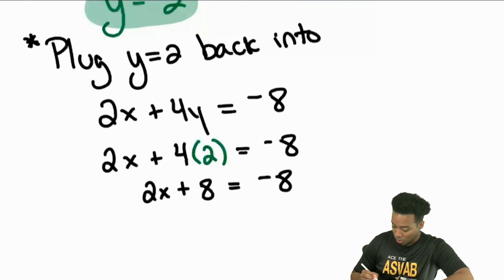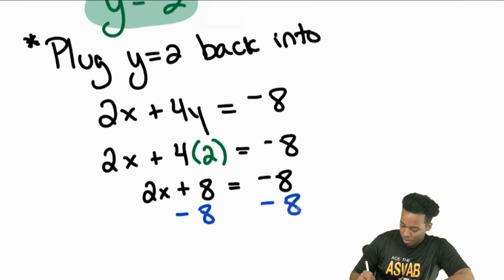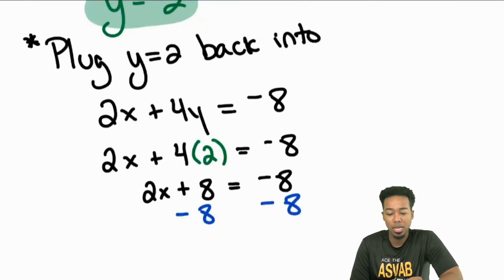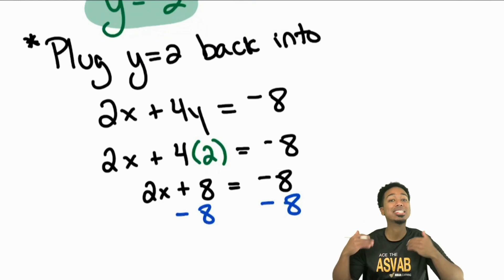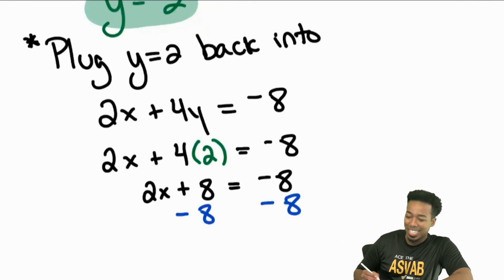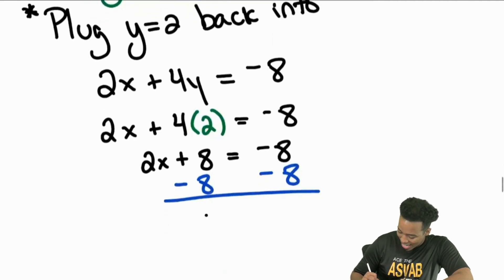So first thing we're going to do is subtract 8 from both sides. Once we subtract 8, this is going to be a very easy mistake that people make. A lot of people think that negative 8 minus 8 cancels out. That is not correct. If you are at negative 8, and then you take away 8 more, negative 8 means you already took away 8. If you took away 8 more, that means you have taken away 16. You are at negative 16. At this point here, we are at negative 16.